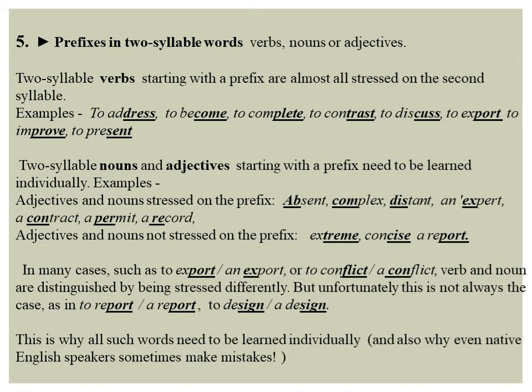Examples of adjectives and nouns where stress is on the prefix: 'AB-sent', 'COM-plex', 'DIS-tant', 'EX-pert', 'CON-tract', 'PER-mit', 'REC-ord'. Some adjectives and nouns are not stressed on the prefix: 'ex-TREME', 'con-CISE', 'a re-PORT'. In many cases, such as 'to ex-PORT' and 'EX-port', or 'to con-FLICT' and 'CON-flict', the verb and noun are distinguished by being stressed differently. But unfortunately this rule does not always apply.